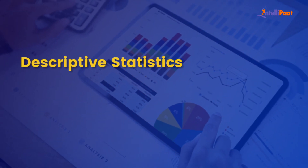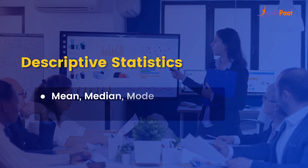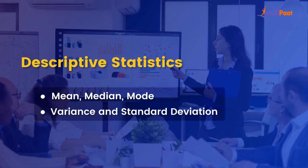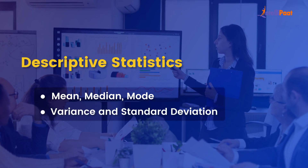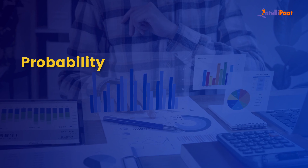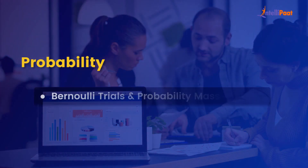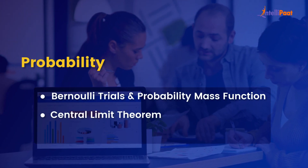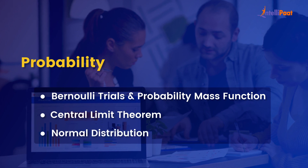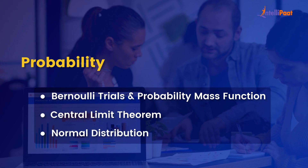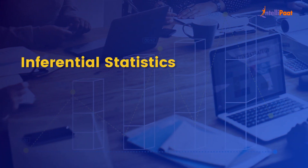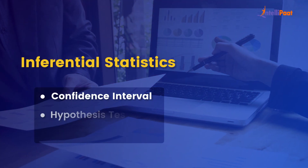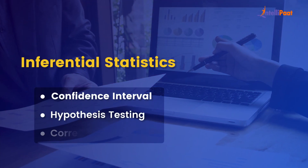Descriptive statistics involves mean, median, mode, variance, and standard deviation. Once done with that, you'll move on to probability, covering Bernoulli trials, probability mass function, central limit theorem, normal distribution, and more. Finally, you'll dive into inferential statistics, where you'll cover confidence interval, hypothesis testing, and correlation.